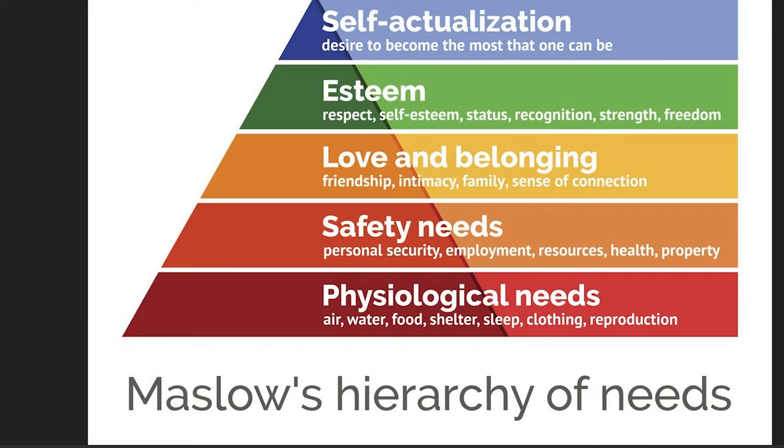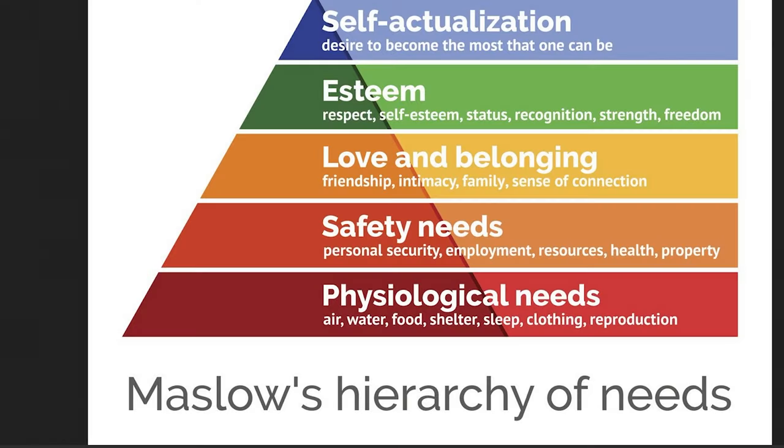Maslow did not believe that things at the bottom needed to be met in order to move up a pyramid. He actually believed you would do all these things at once — the things at the bottom were just foundational. This expression of Maslow's as a pyramid is the most incorrect version that could lead to harmful ideas about how to achieve those top-tier things. It's worth noting this is fundamental to pretty much any education program, and our argument is that progressive education is education — a good education is a progressive education.